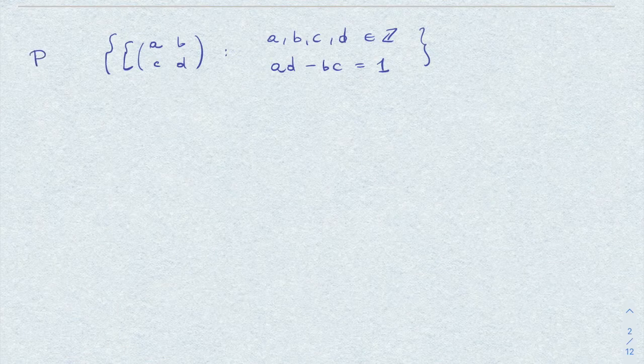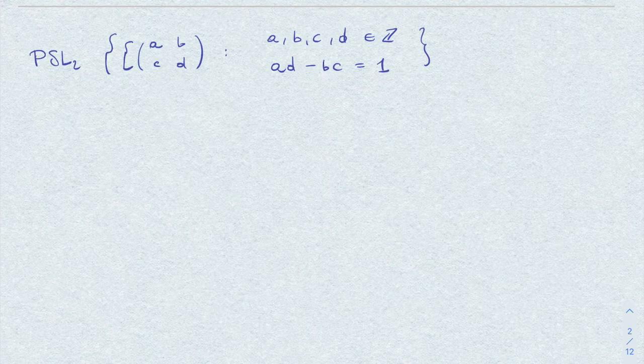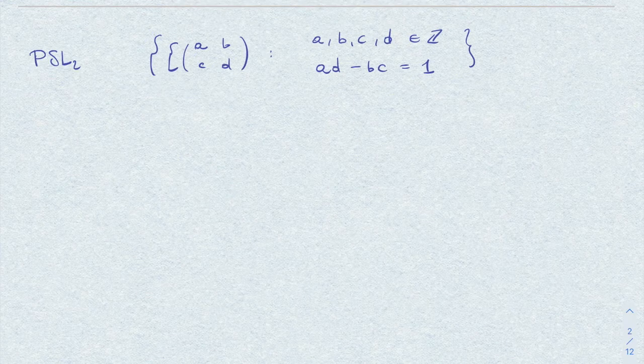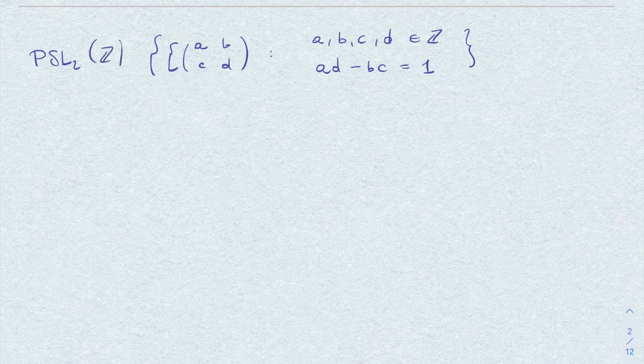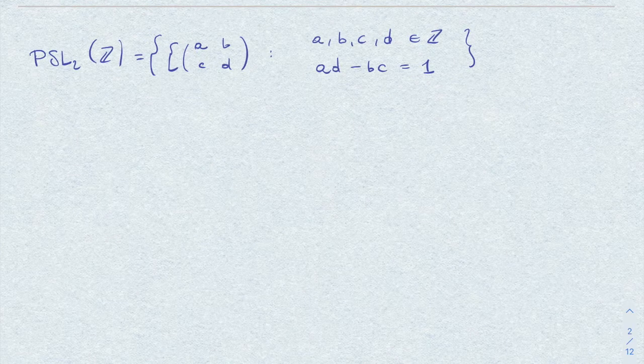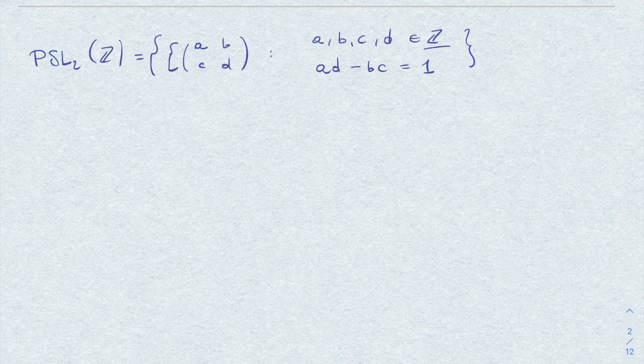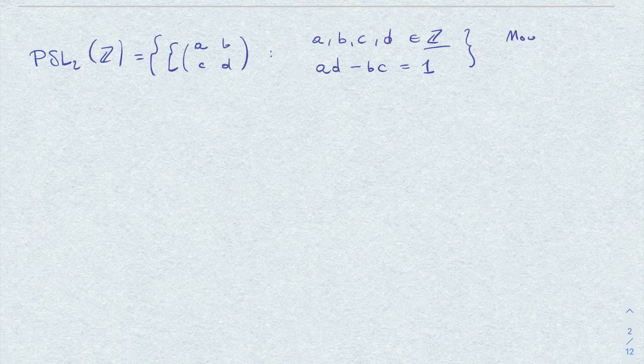and its official name is PSL₂, projective special linear group. One also writes Z because the coefficients here are in Z. There are also applications of this group to modular arithmetic, and for this reason, this is also often called modular group.